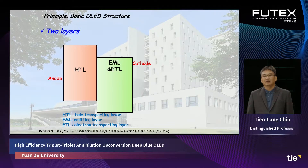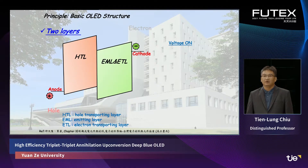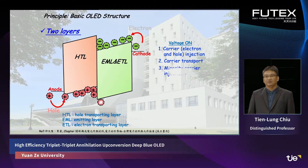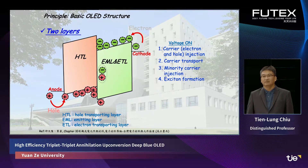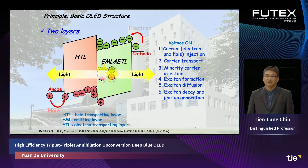We will introduce the basic OLED structure. We have four layers: anode, hole transporting layer, emitting layer, electron transporting layer, and the cathode. When we apply voltage, carriers inject into the organic layer and transport to the interface, accumulate at the interface, and then electron-hole pairs form excitons. The excitons diffuse and release energy to become photons.